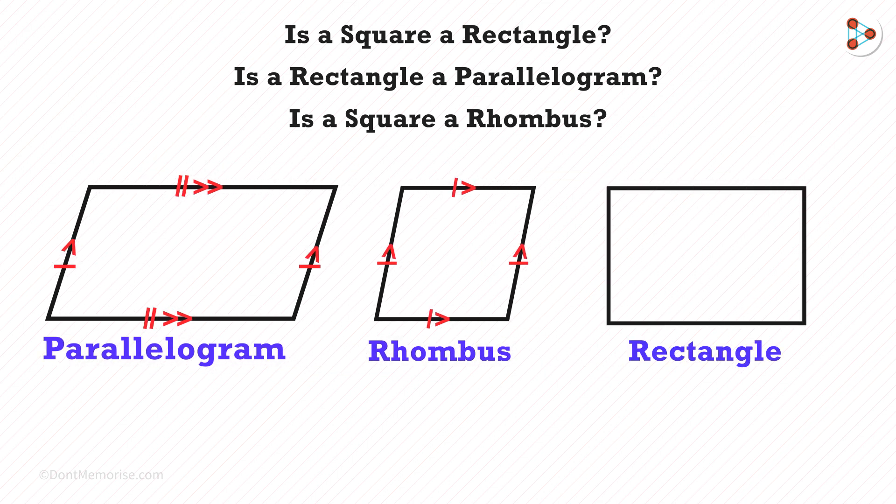And what's a rectangle? A rectangle is a quadrilateral with opposite sides parallel and equal. And there is one more condition that says all four angles must be equal to 90 degrees.